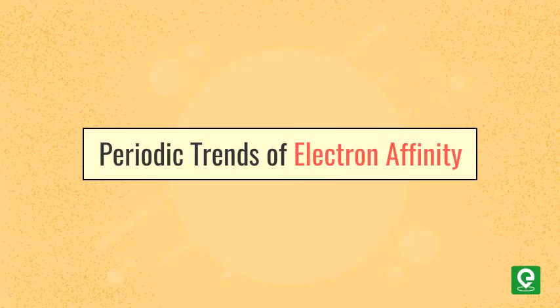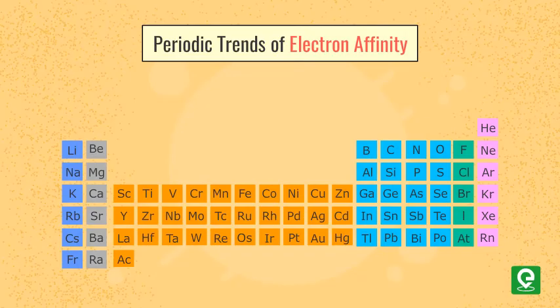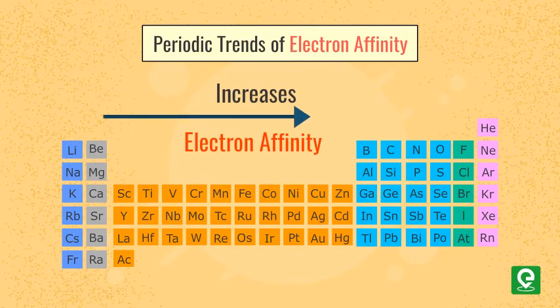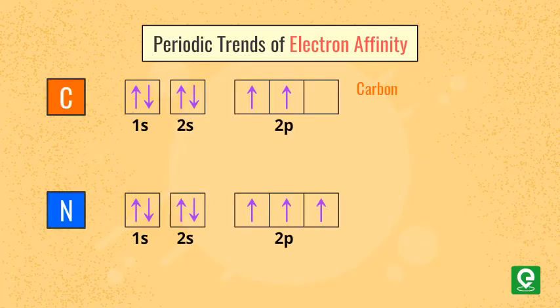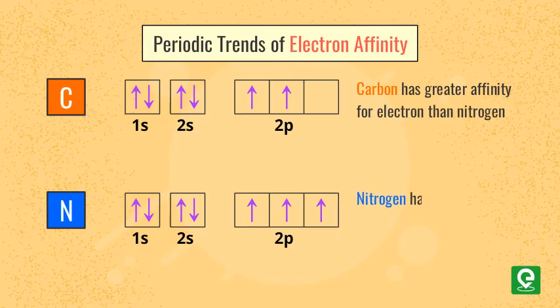In a period, electron affinity increases from left to right. Exception occurs in case of carbon and nitrogen: carbon has greater electron affinity than nitrogen because nitrogen has more stable half-filled valence shell electronic configuration.